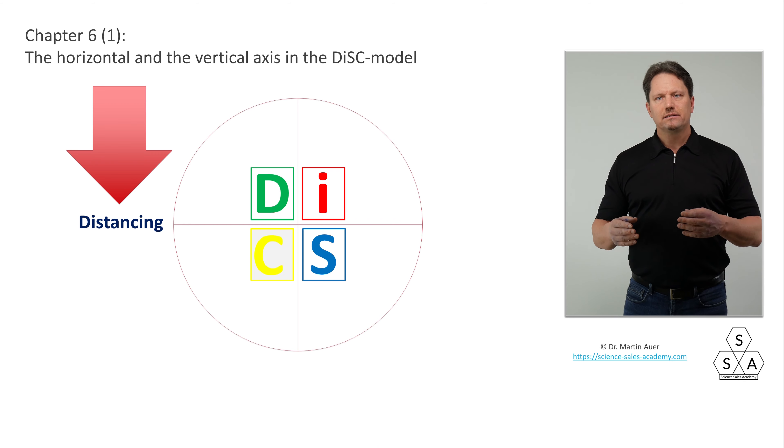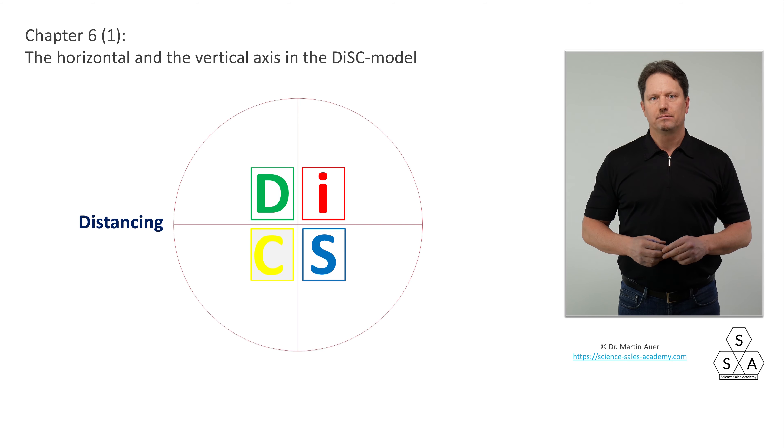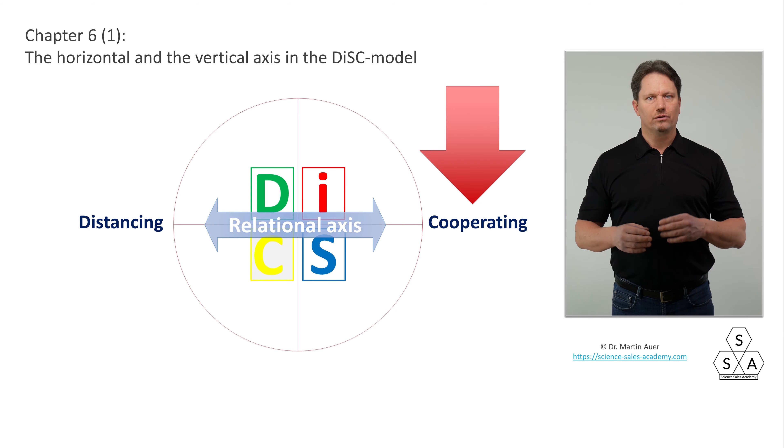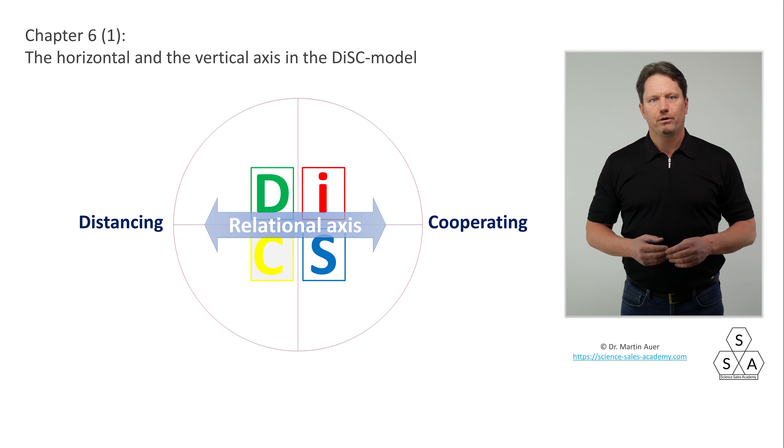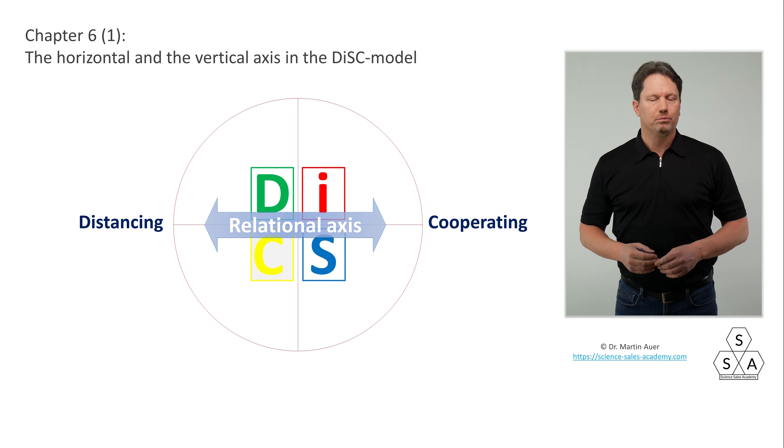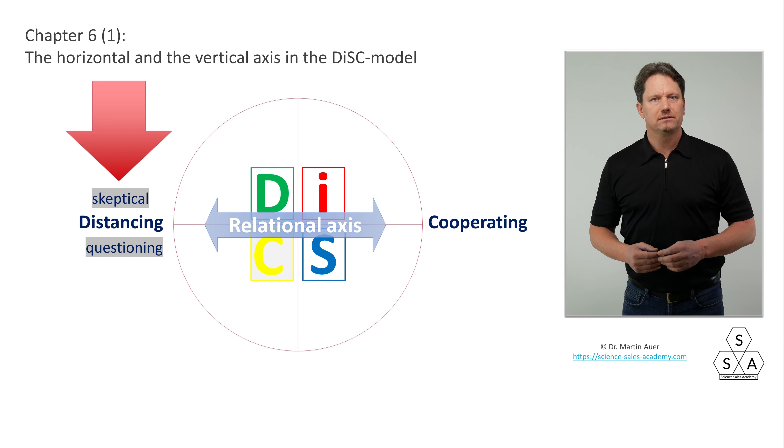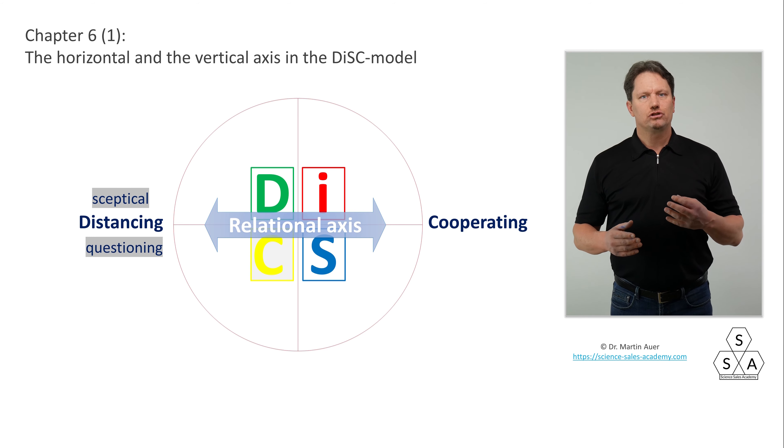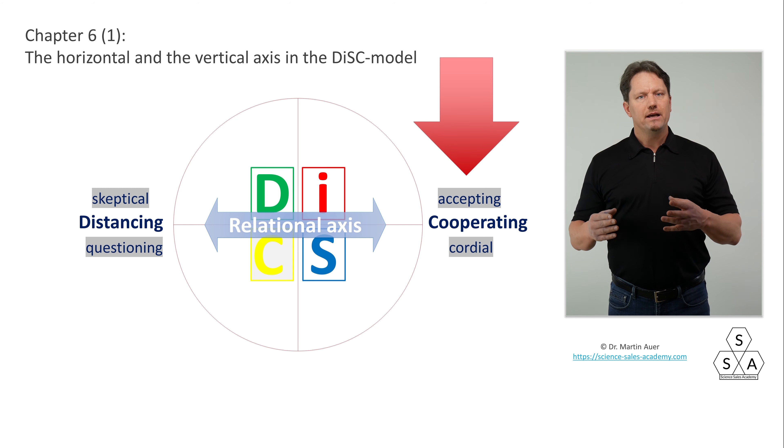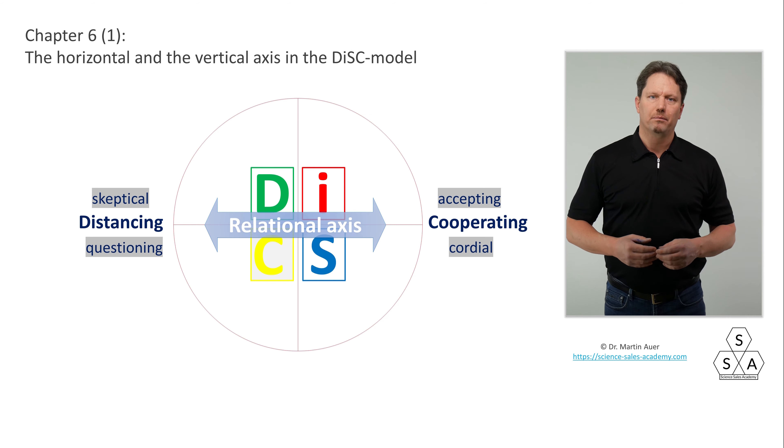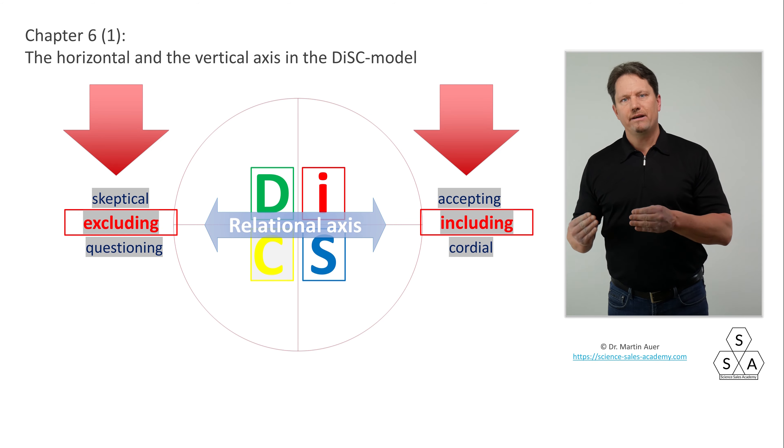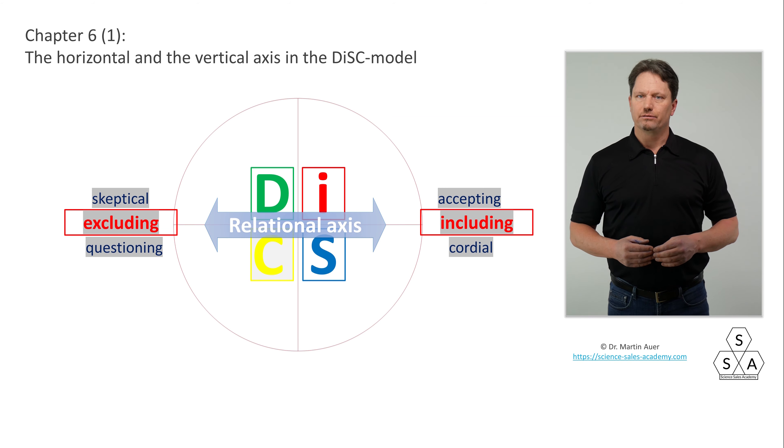We start on the left side, at 9 o'clock position. Here, as already mentioned, is the desire for distancing and distanced behavior. If we move to the right side on the horizontal axis, the relationship axis, to the 3 o'clock position, then we are at the other extreme, namely the desire of a person to ally and cooperate with other people, to fraternize, to group together. Accordingly, at the 9 o'clock position, at the left end of the horizontal relationship axis, we find typical characteristics like skeptical or questioning, while at the right end at 3 o'clock position, behavioral characteristics such as accepting and warm can be found. We could also say whole left side of the circle, excluding or exclusive, while right side, including or inclusive.